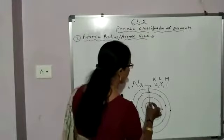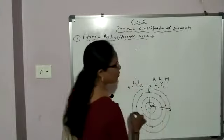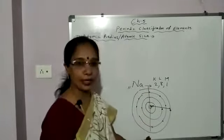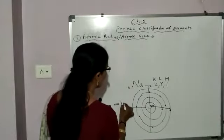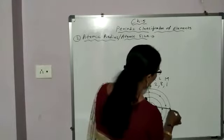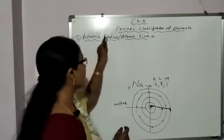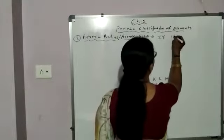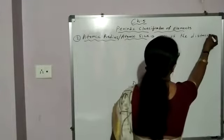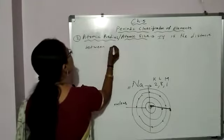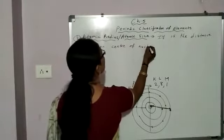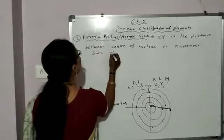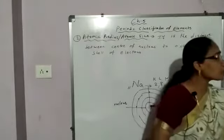So what is atomic size? It is the distance between the center of the nucleus and the electrons in the outermost shell. This distance from the center of the nucleus to the outermost shell of electrons is called atomic radius or atomic size.